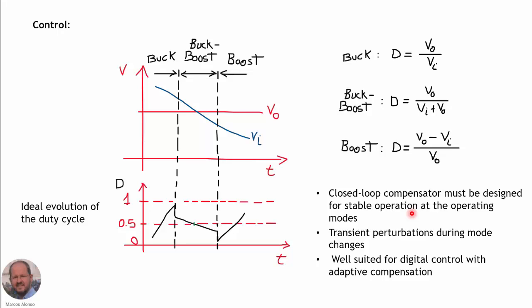The dynamic responses of the buck, buck-boost, and boost converters are different, so we need a compensator that works well in all three situations. There will also be perturbations when changing modes. Implementation with analog circuitry can be quite challenging, so we can consider digital control with adaptive compensation, changing the compensator parameters between buck, buck-boost, and boost modes to optimize the dynamic response in each region.